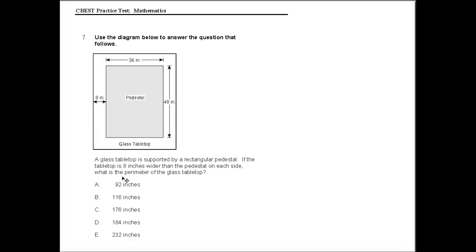This question is going to ask us to calculate the perimeter of the glass tabletop. The outer edge here is the glass tabletop. The pedestal is indicated right here. What it's telling us is that the glass tabletop is 8 inches wider than the pedestal on each side.